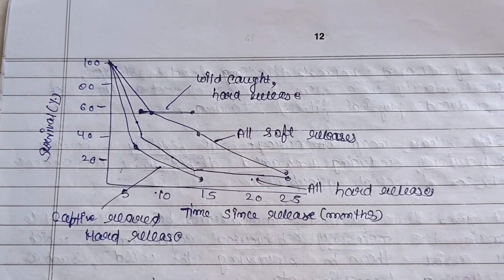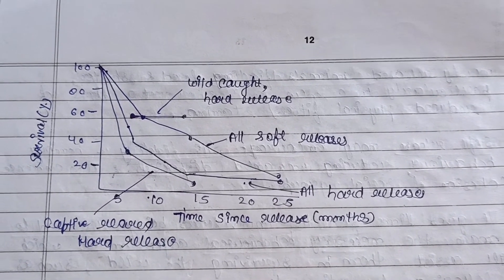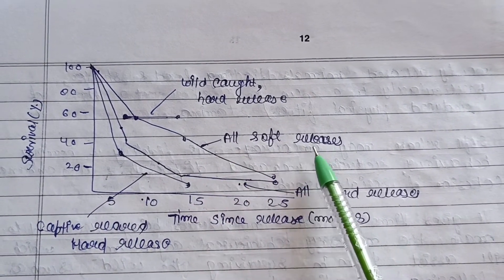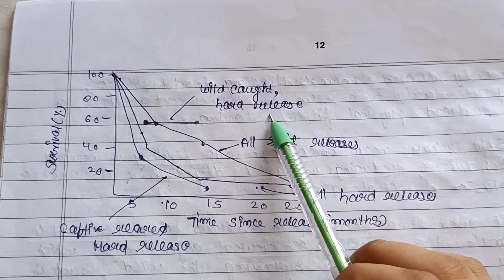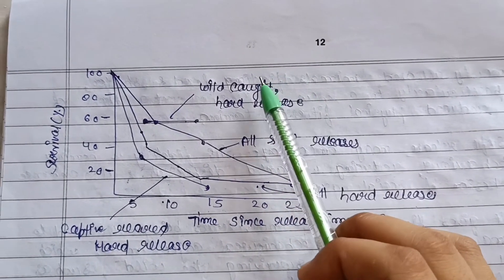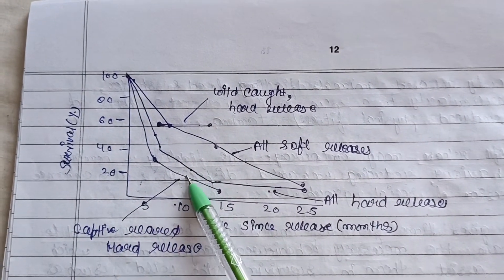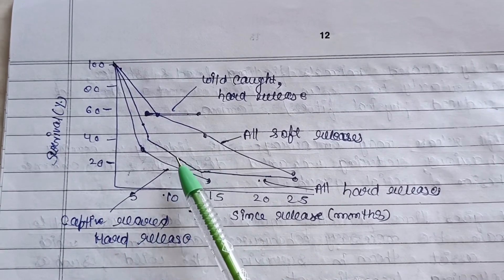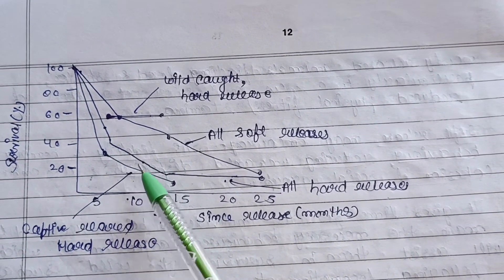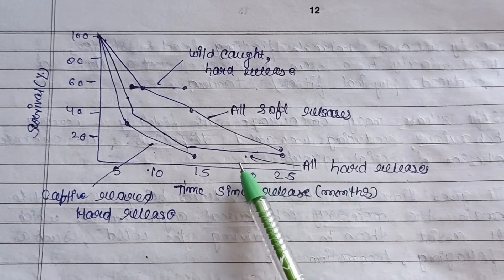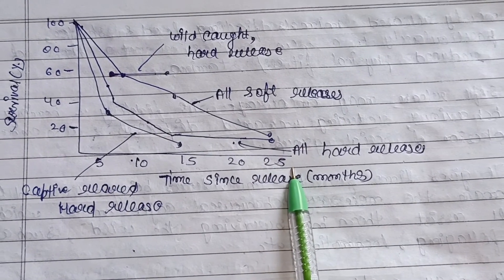A diagram shows survival percentage over time in months since release for different groups. Soft release animals show high survival rates. Wild-caught animals given hard release also show high survival — around 60% — because they are adults capable of adapting. Captive-reared animals given hard release show low survival — around 20% — as they are juveniles that require soft release. Animals given all hard release also show low survival rates across the 5 to 25 month period shown.